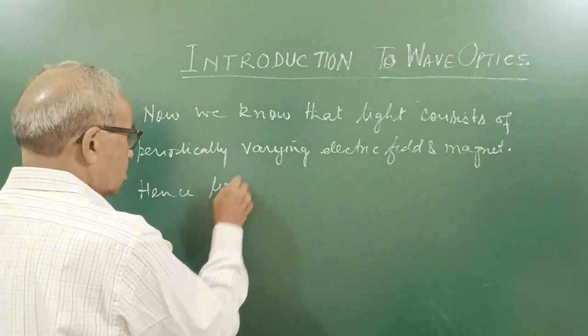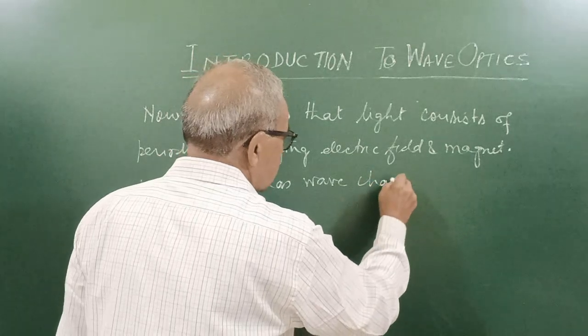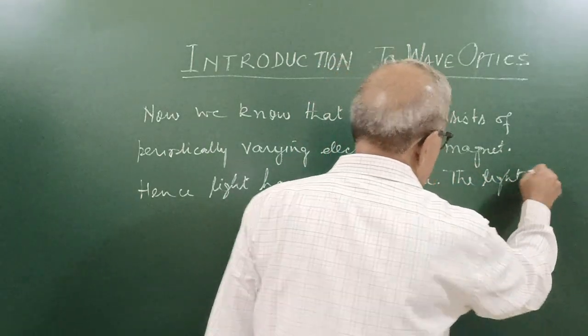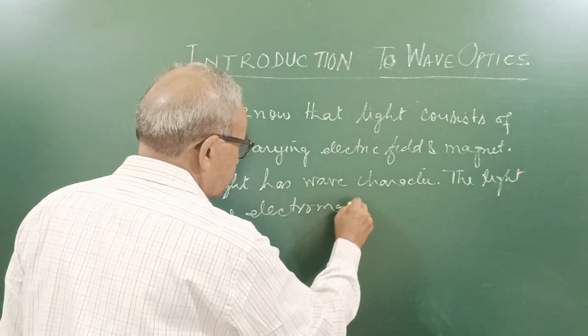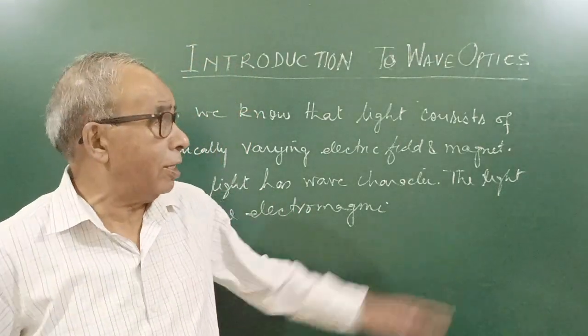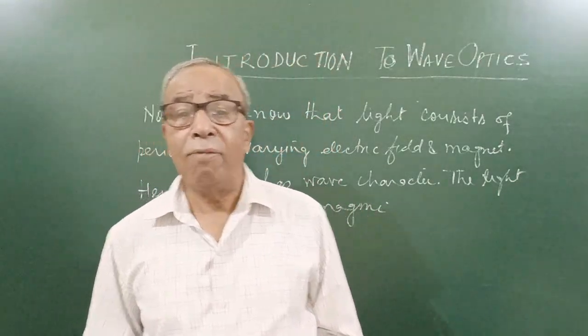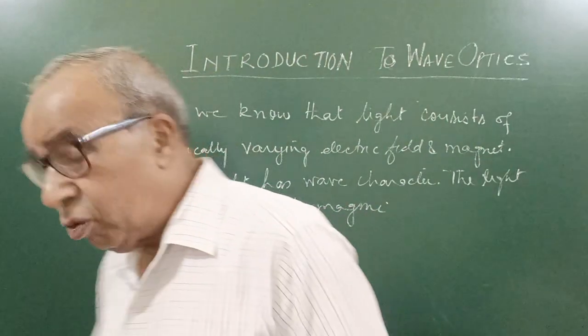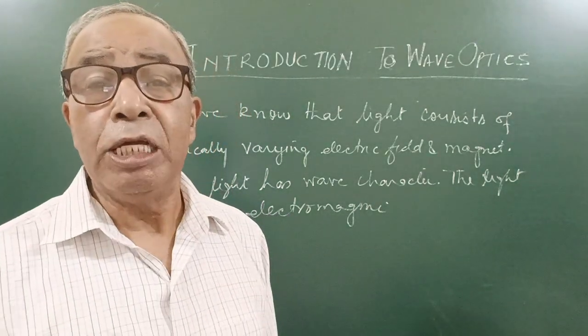Hence light has wave character. The light means electromagnetic waves. So light has wave character does not mean that light travels along a curved path. The wave character is that wherever there is light, there exists time varying electrical and magnetic field. Variation of physical quantity—I am repeating again—variation of some physical quantity which keeps on changing periodically with distance and time, space and time both.